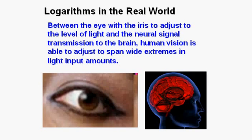Between the eye with the iris to adjust to the level of light and the neural signal transmission to the brain, human vision is able to adjust to span wide extremes in light input amounts.